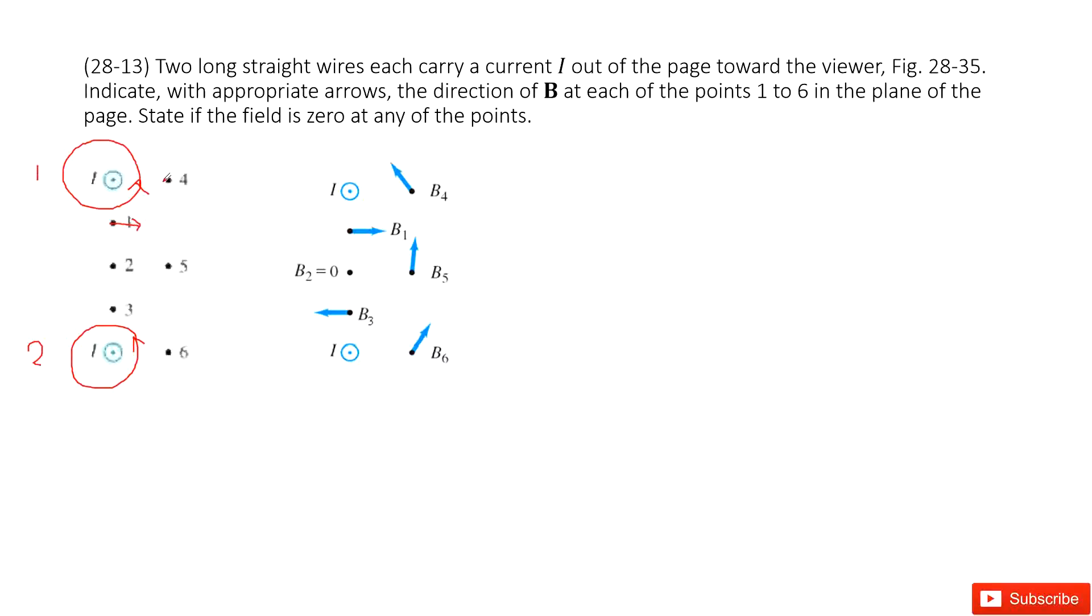Since it's a circle, for point 4, B₄ goes this way in the tangential direction. For point 3, it goes this way following the circle, because point 3 is closer to wire 2. Point 6 goes this way as well.